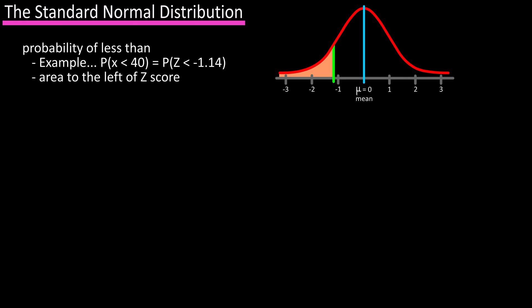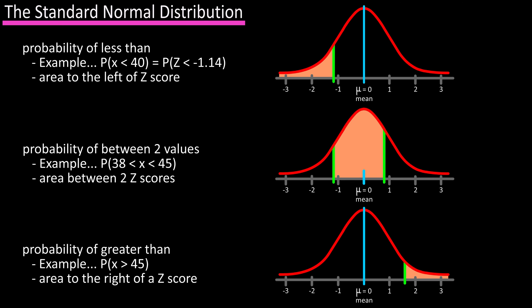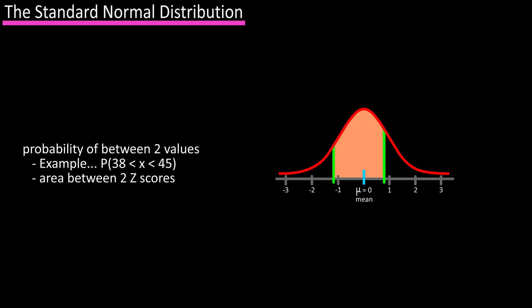Using the standard normal distribution and z-scores, we have calculated the area or probability of something lower than, or to the left of, a z-score. There are two other important ways to use this method: for finding the area or probability of something between two values, or finding the area or probability of something greater than a value. First, let's look at between two values.